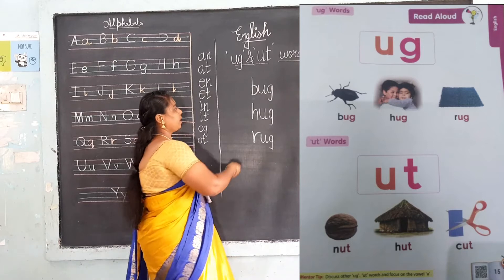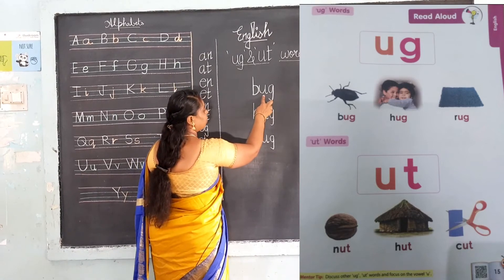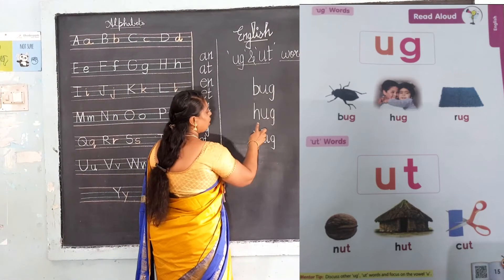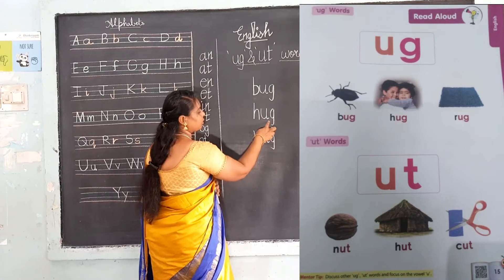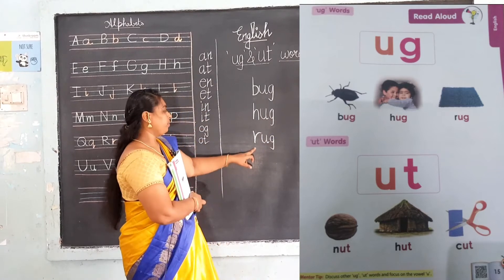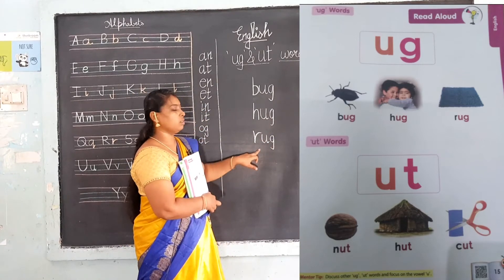Say again: bug, bug, hug, hug, R, U, G — rug.